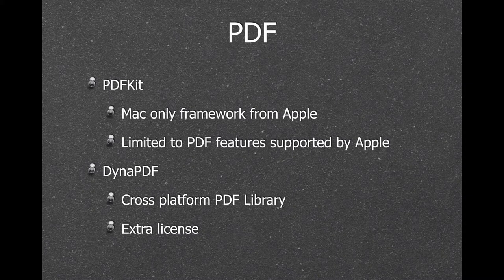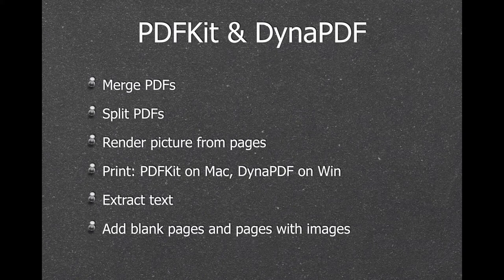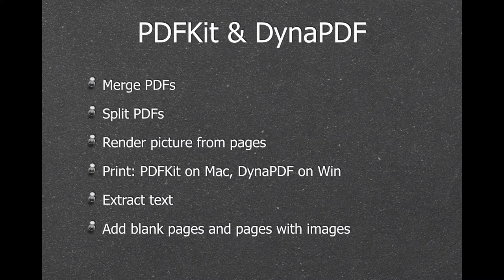In the MBS plugin we have a lot of PDF functions. We can either use the PDFKit framework on Mac and use all the PDF features Apple supports, or we use the DynaPDF functions which use a cross-platform PDF library — available with the MBS plugin but as an extra license. Both PDF libraries can do normal PDF merging, so you can add your Terms and Conditions PDF to your existing invoice PDF. You can split PDFs, render pictures from pages to show them in a non-interactive container instead of providing the PDF to the user. You can print a PDF on Mac with PDFKit or with DynaPDF on Windows.